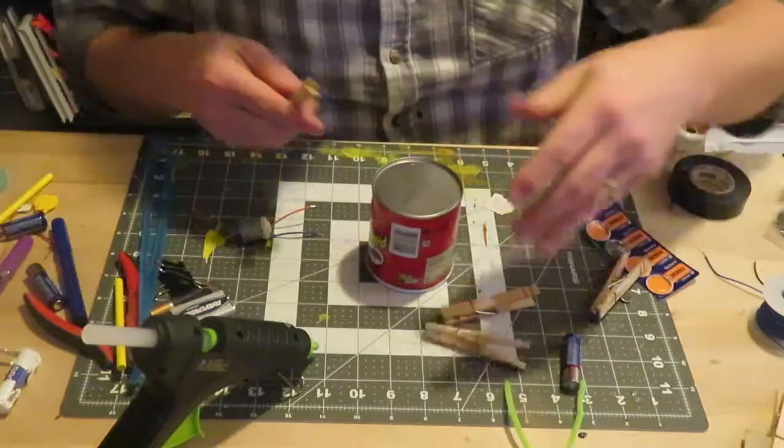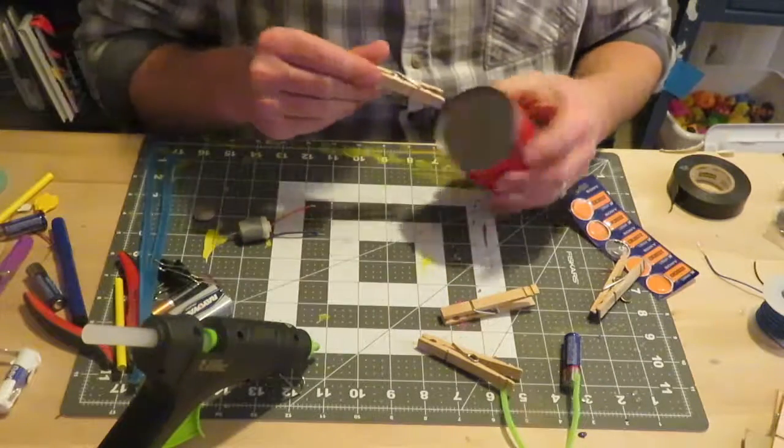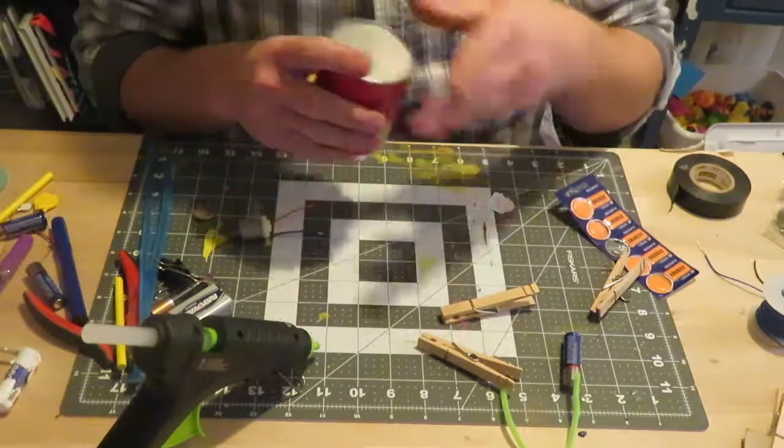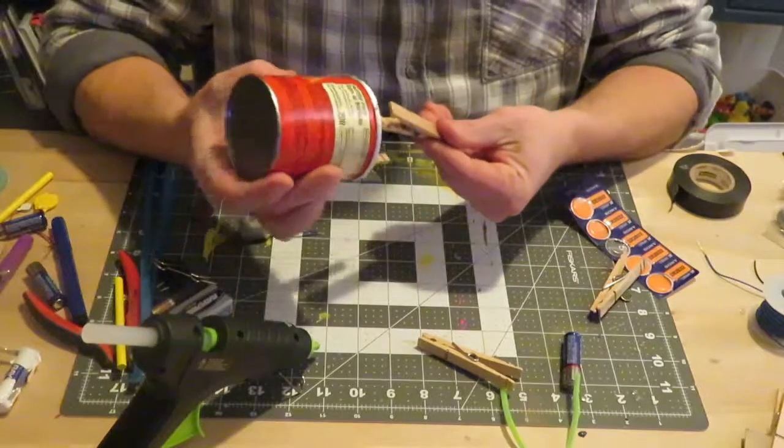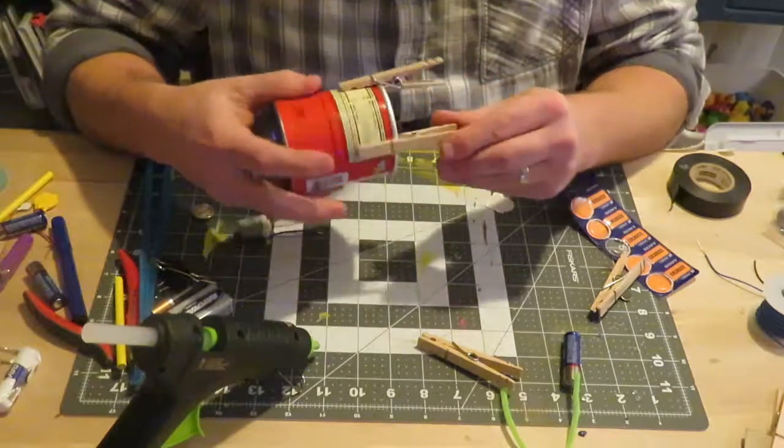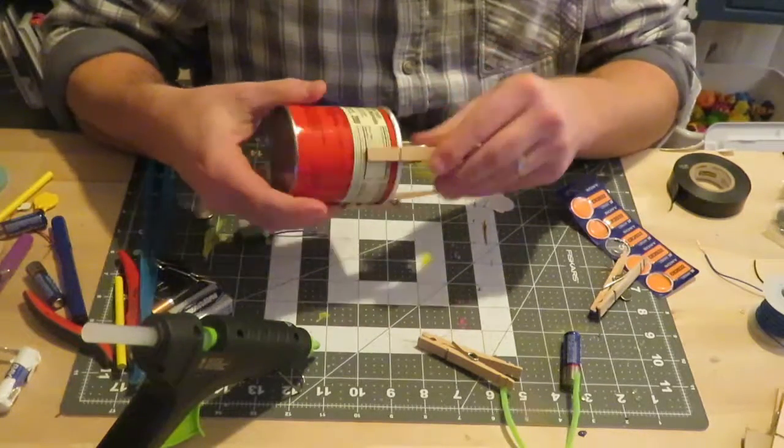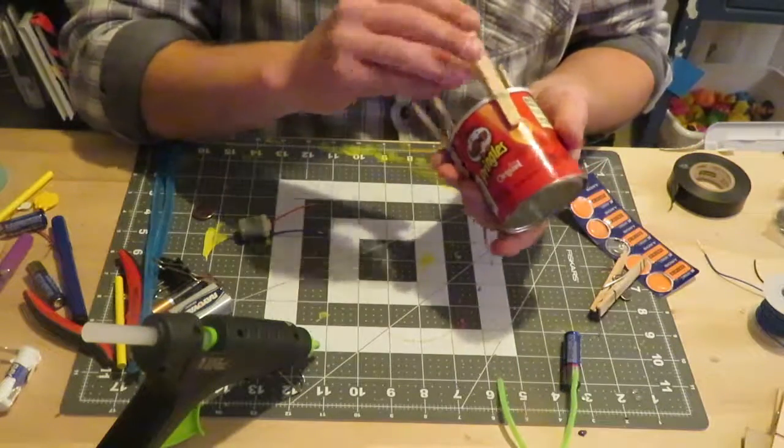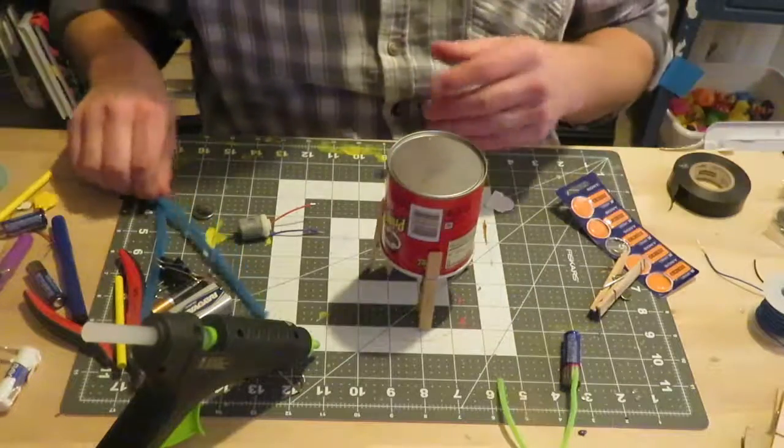So we're going to use this. You could tape these, you could glue these on, you could do rubber bands, whatever you want to do. Actually, these might hold pretty well without anything, depending on the kind of strength of clothespins that you get. These are just standard, nothing special. So we're going to try just without anything, just for the time being, but I think this will actually hold.